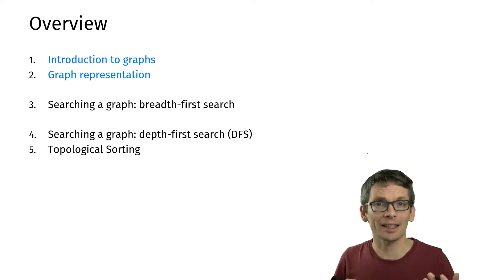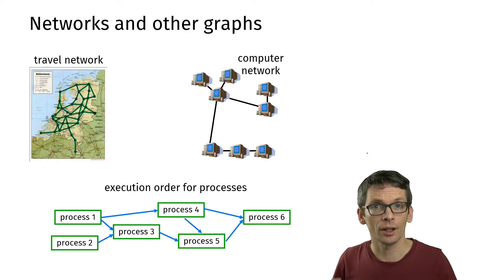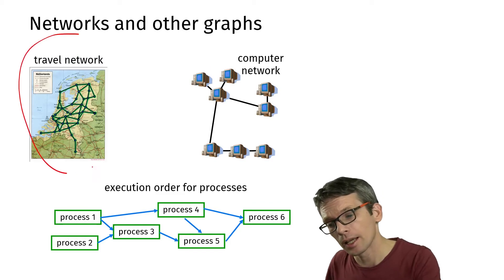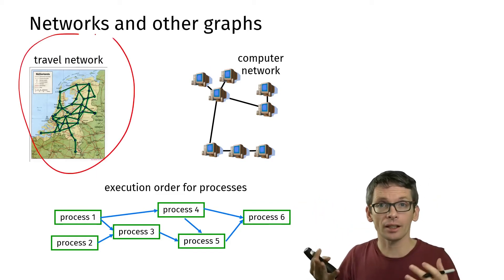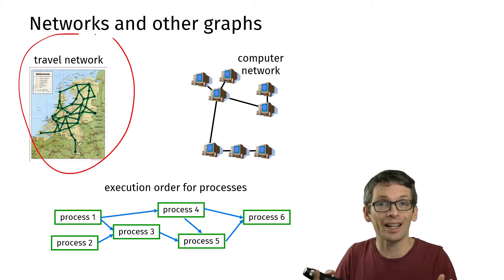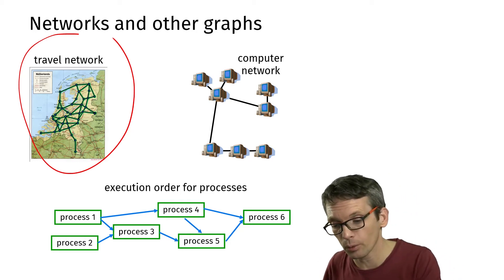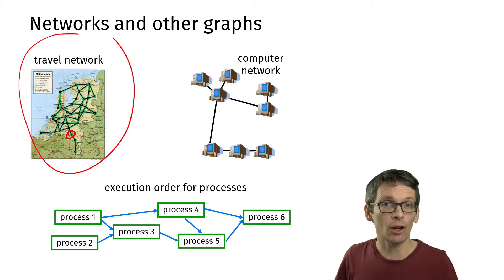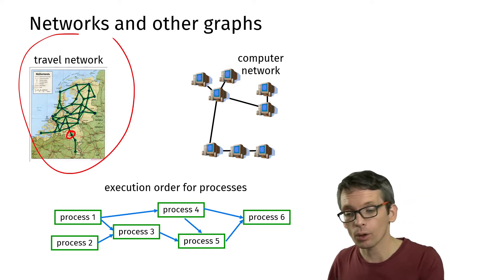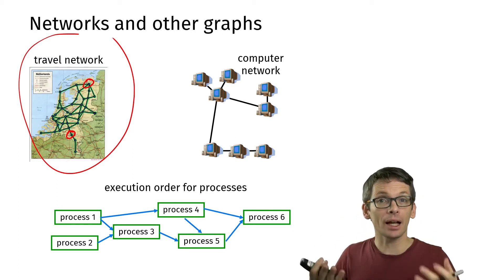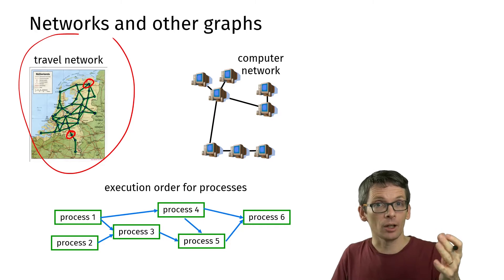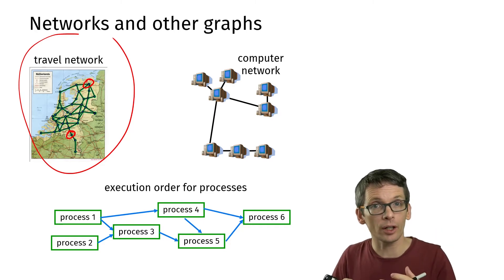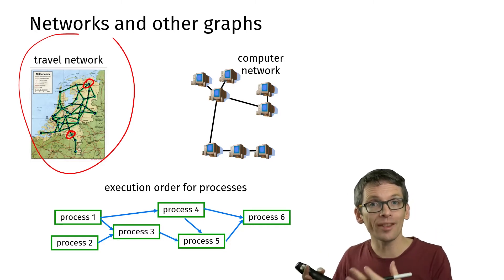Let's first look at some examples of graphs. The first example is a travel network. We have cities connected by streets, or if this is a rail network, by railway connections. If I'm in the city down there and want to travel up here, I might ask how many stops does it take to get there. So this already would be an algorithmic question on this network.